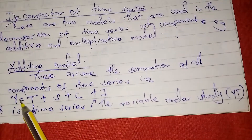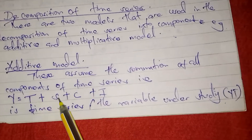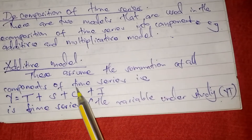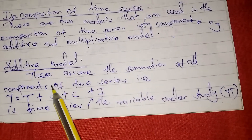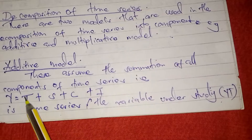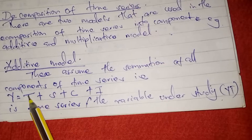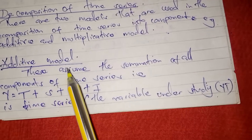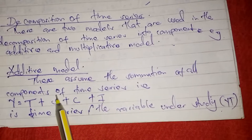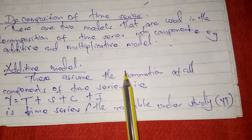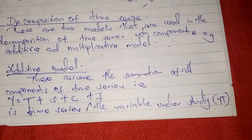Remember in our previous video we had four components: we had the trend which is T, we had the seasonal, the cyclical, and then the irregular. So the additive model assumes the addition of the four components: Y is equal to T (trend) plus S (seasonal) plus C (cyclical) plus I (irregular). Y is the time series or the variable under study.